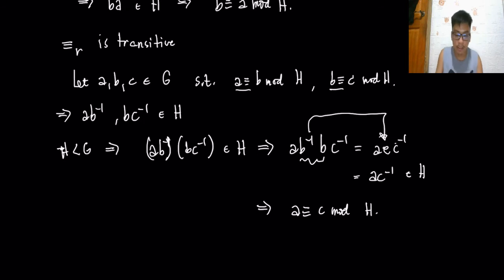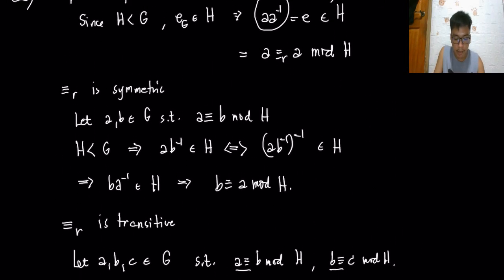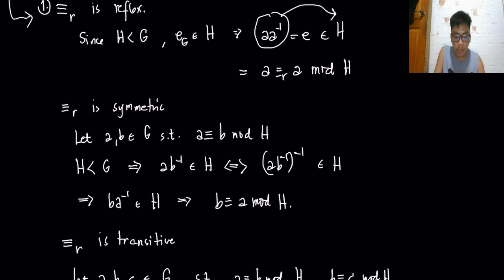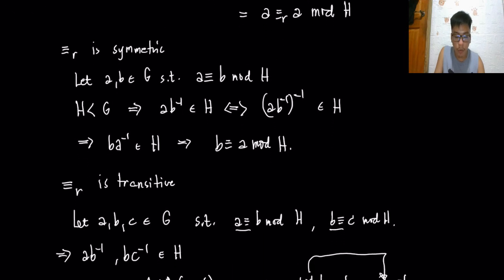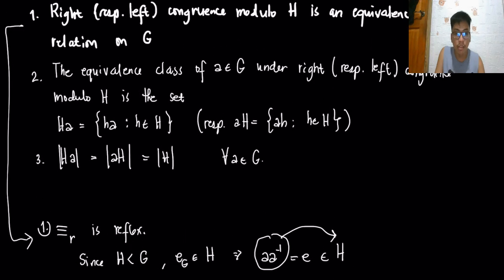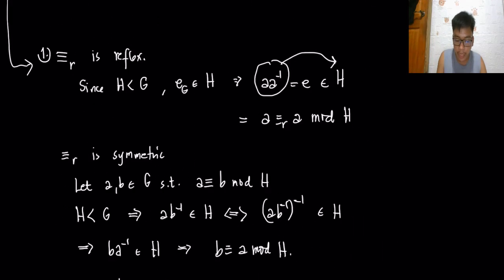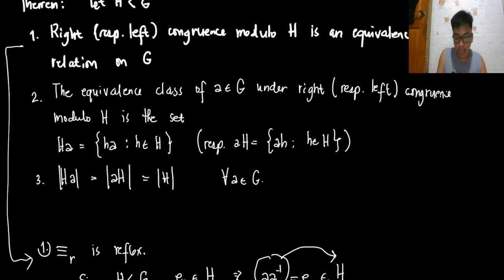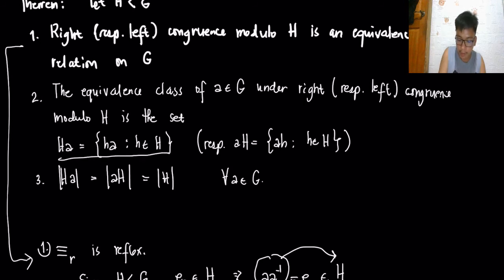Since we have shown the relation is reflexive, symmetric, and transitive, we have proven claim one: it is an equivalence relation on G. Now for claim two: the equivalence class of a in G under right (or left) congruence modulo H is the right coset Ha (or left coset aH respectively).